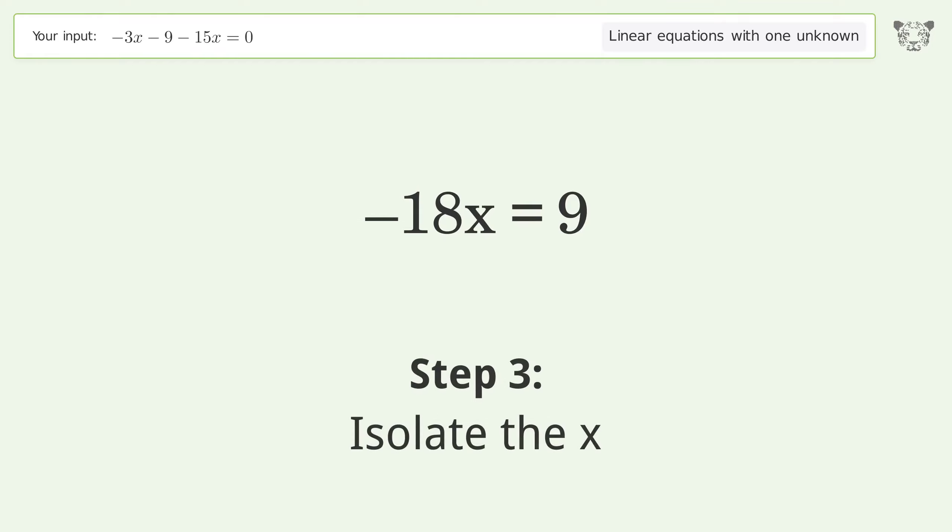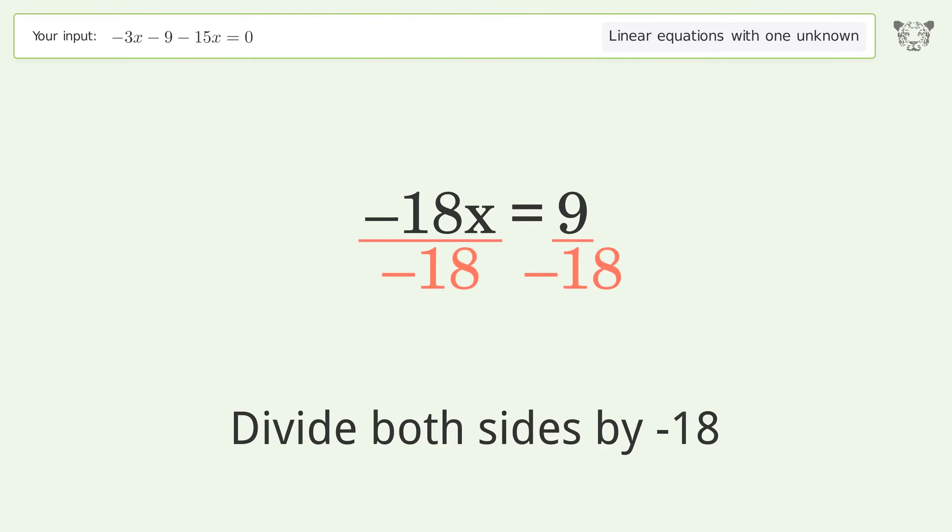Isolate the x. Divide both sides by negative 18. Cancel out the negatives.